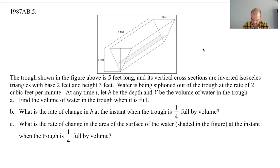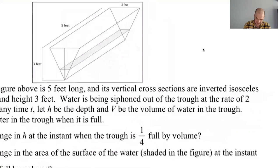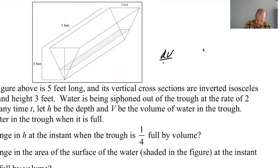Its vertical cross sections are inverted isosceles triangles with base two feet and height three feet. Water is being siphoned out of the trough at a rate of two cubic feet per minute. So that's the volume and it's negative, so I'm gonna say dV/dt is negative two feet cubed per minute.